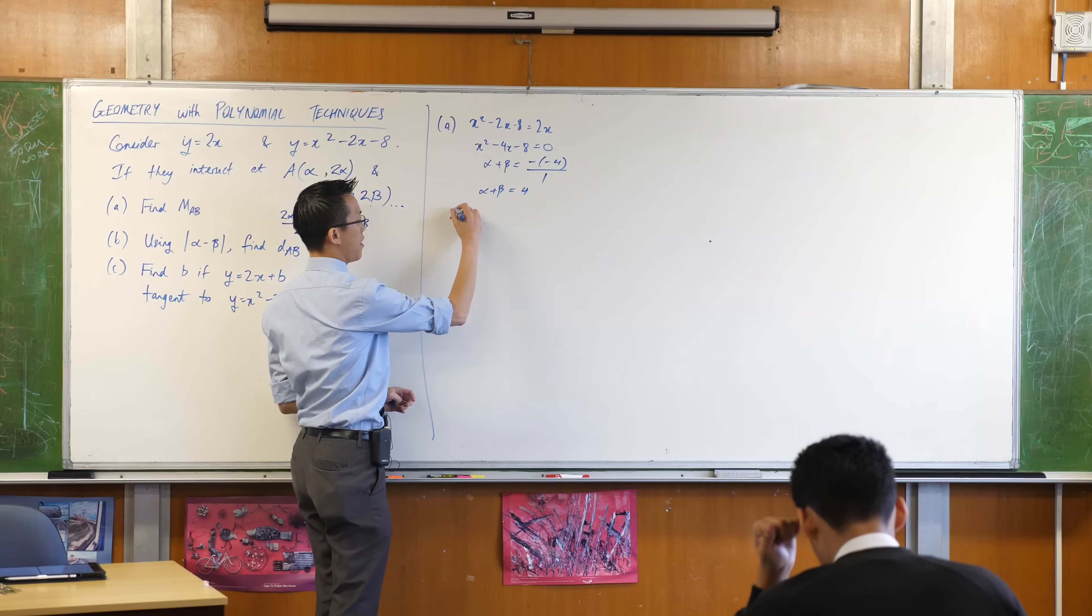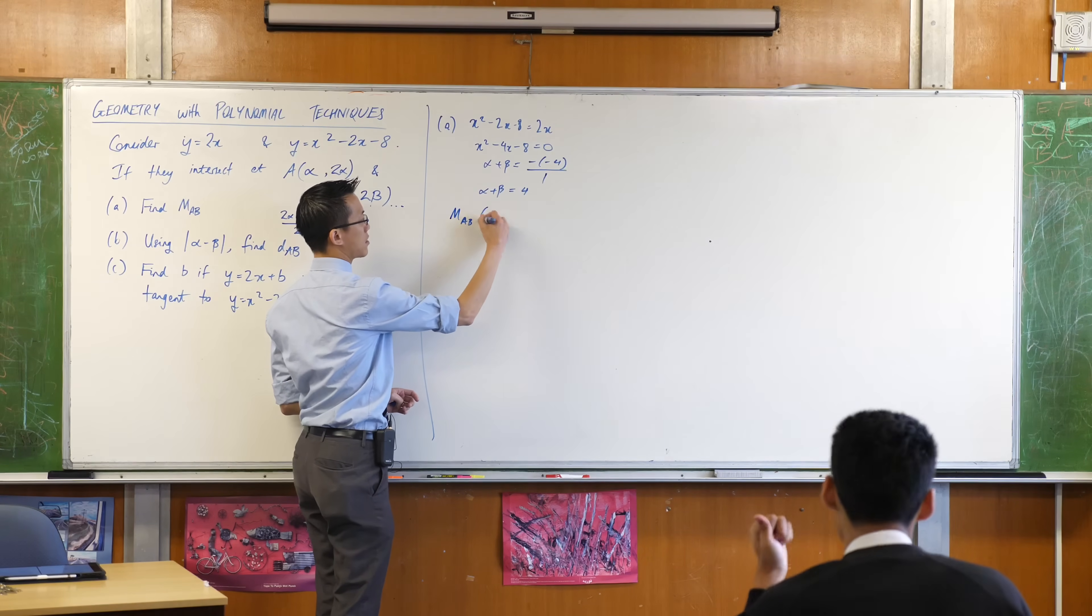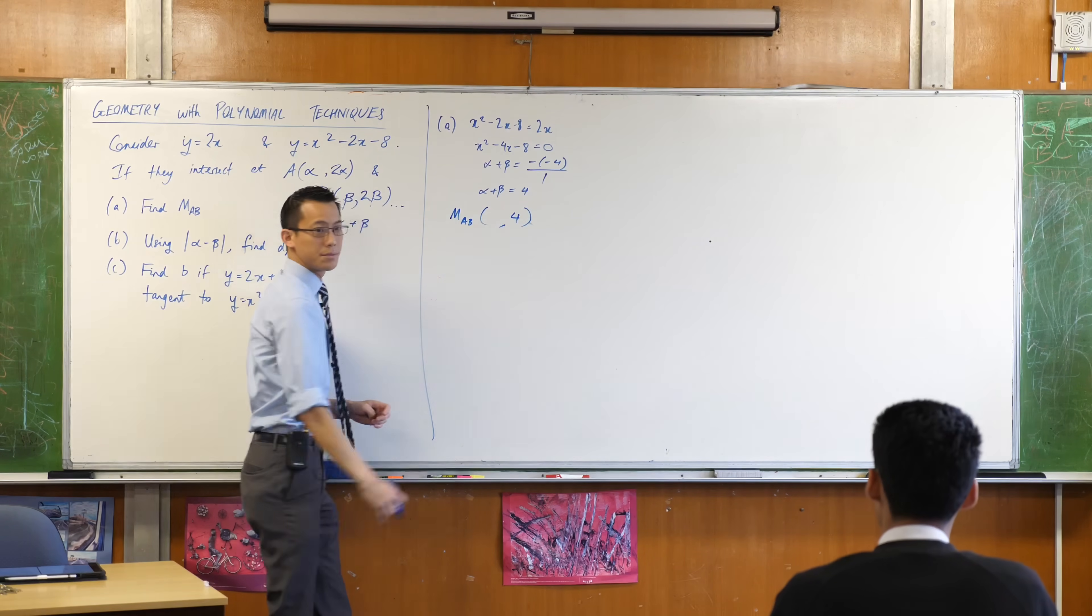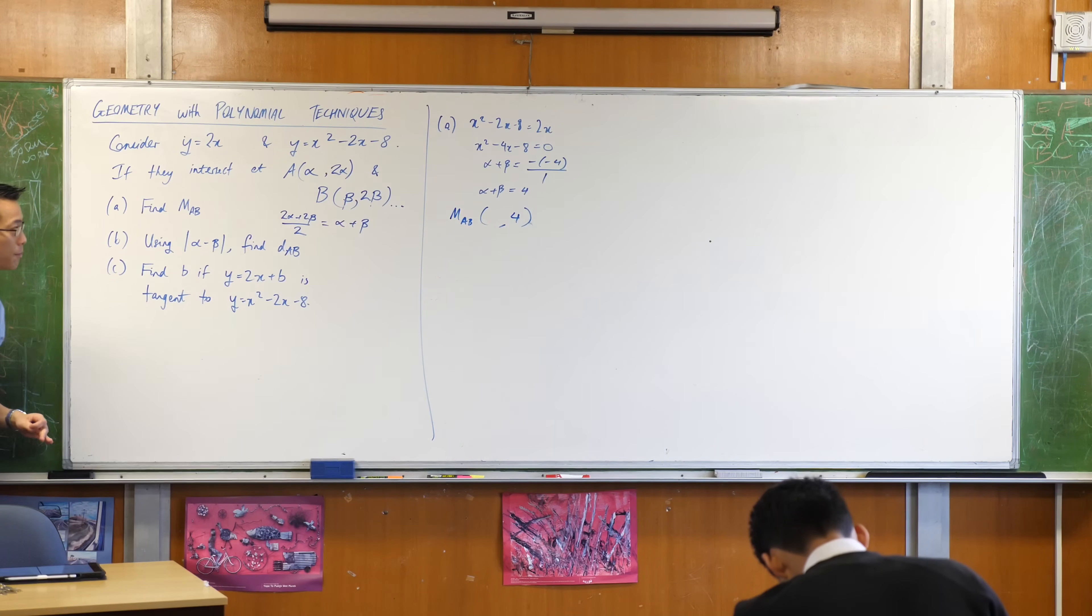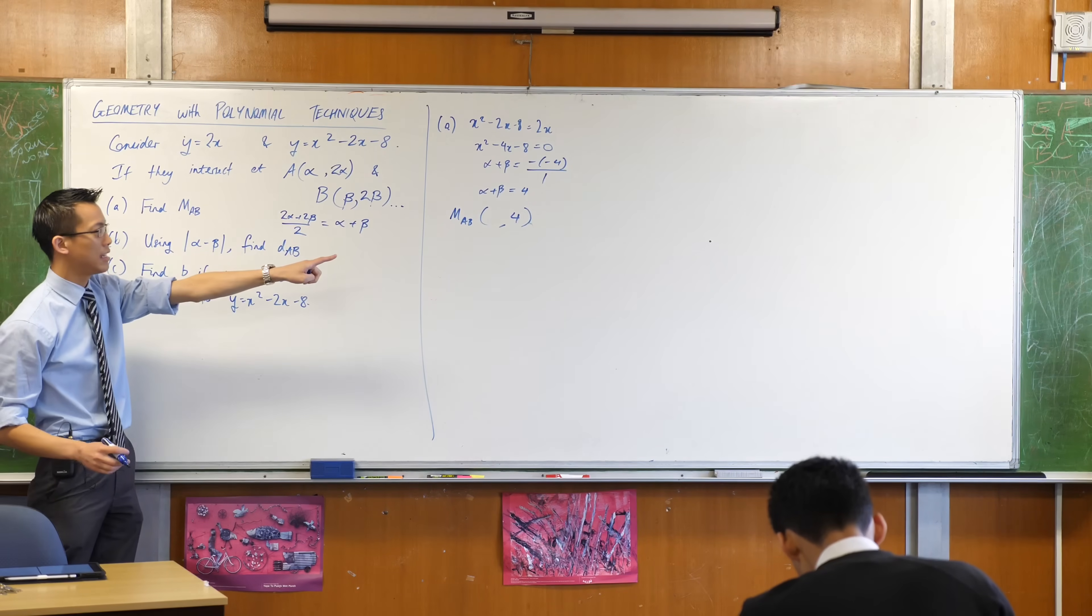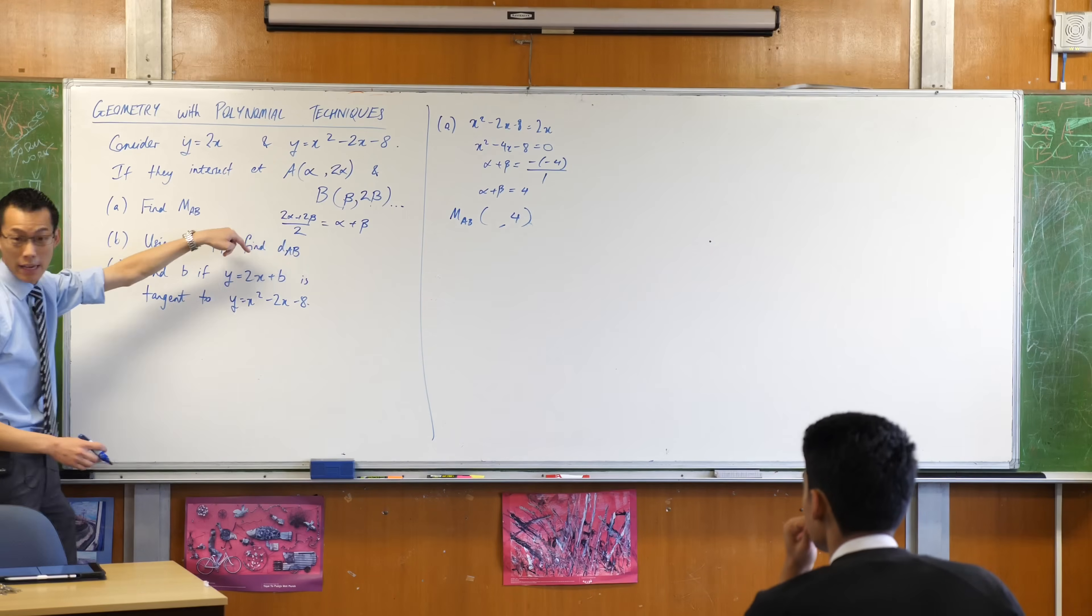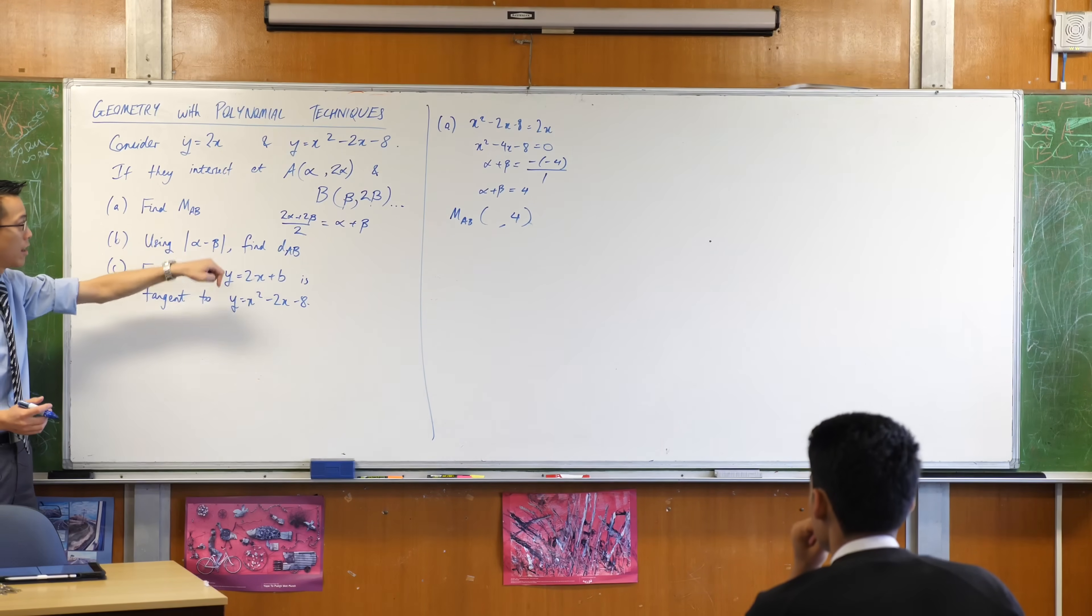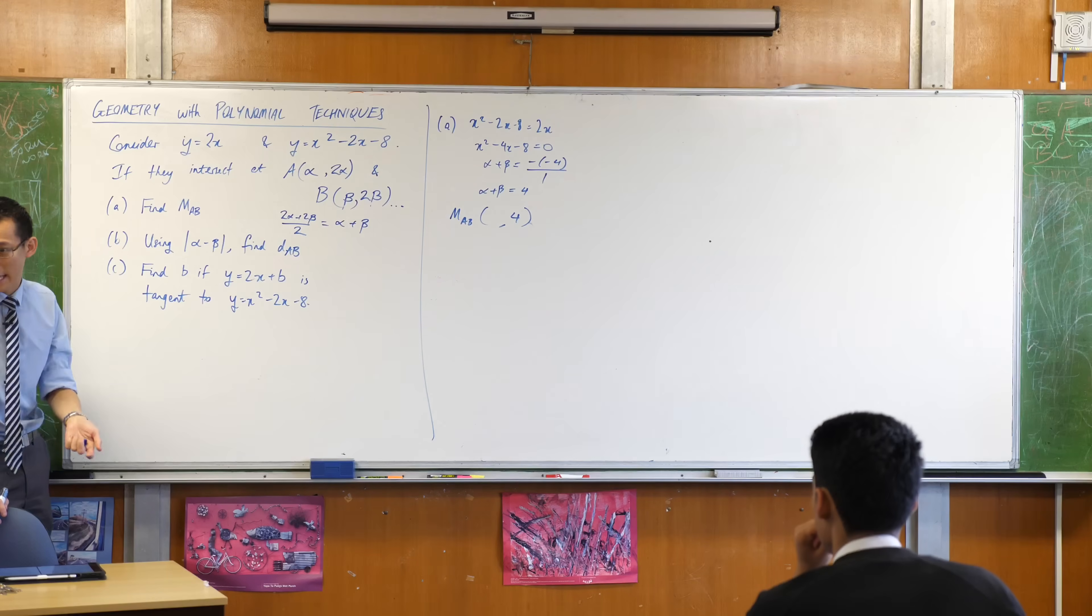Right away I know the y coordinate of the midpoint. Done. So M_AB is going to be (something, 4). How do I find the other piece? I've got lots of options here.